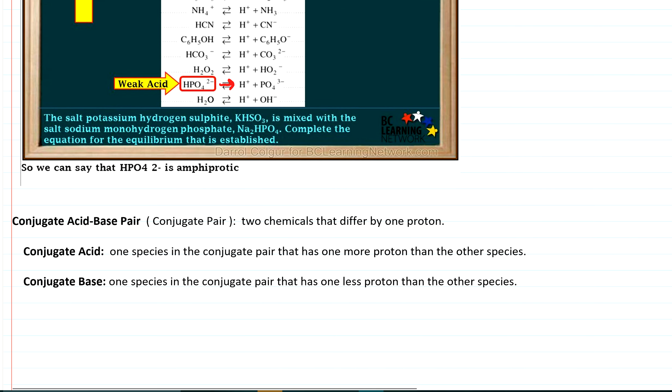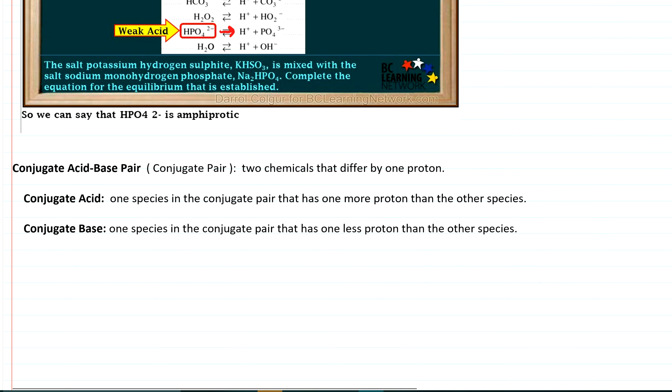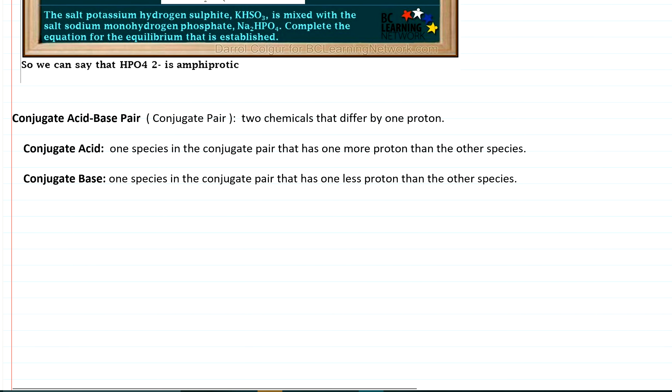So let's look at conjugate acid-base pairs here. So this is not too bad to look at. And so these are basically two chemicals that differ by having one proton.